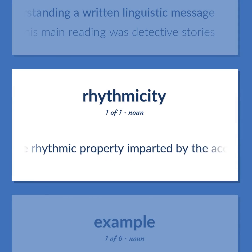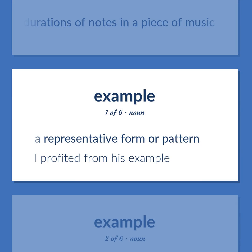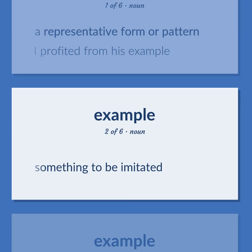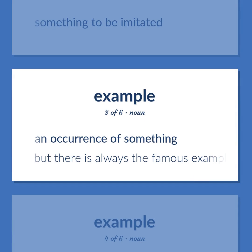BEAT/RHYTHM: The rhythmic property imparted by the accents and relative durations of notes in a piece of music. EXAMPLE: A representative form or pattern — I profited from his example. Something to be imitated. An occurrence of something — but there is always the famous example of the Smiths.